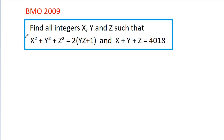In this video, we have to find all integers x, y, and g such that x² + y² + g² is equal to 2 times (yg + 1), and x times y times g is equal to 4018.